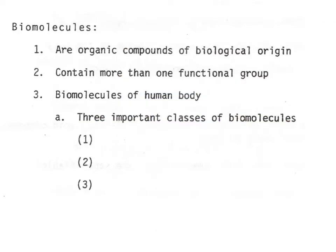So what are biomolecules? Biomolecules are organic compounds of biological origin — that just means they're made by humans, animals, plants, or something like that. We know that they contain more than one functional group. Oftentimes the functional group is the same and repeats over and over, but they will have more than one. Because of this, we will classify them by type of functional group, but we won't be asking you to name each one specifically.